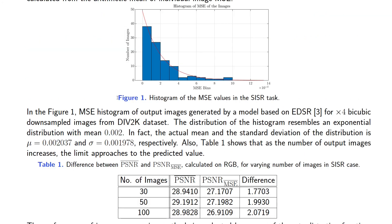As an example, in Figure 1, you see a histogram of MSE values of super-resolved images. As you can see, the distribution looks very much like an exponential distribution, and when we check their mean and standard deviation, we see that they are very close to each other. If we check the difference of two alternative calculations of PSNR values for different numbers of images, as shown in Table 1, the difference approaches the estimated value in the limit.